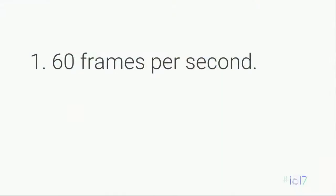Number one, we wanted to hit 60 frames per second all the time. This means that you have to render a frame in 16.7 milliseconds all the time. If you run at 60 frames per second, your app looks fluid, smooth and responsive. If you don't run at 60 frames per second, people notice. The phone doesn't feel fast — it feels like it's struggling. So that kind of consistency is paramount.